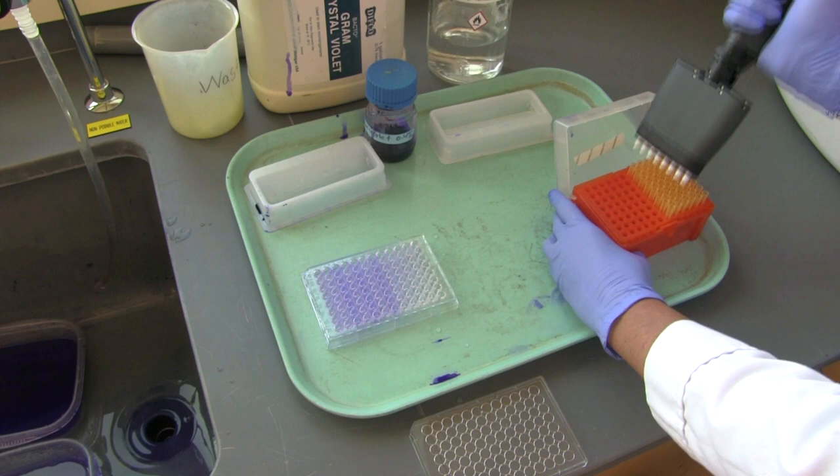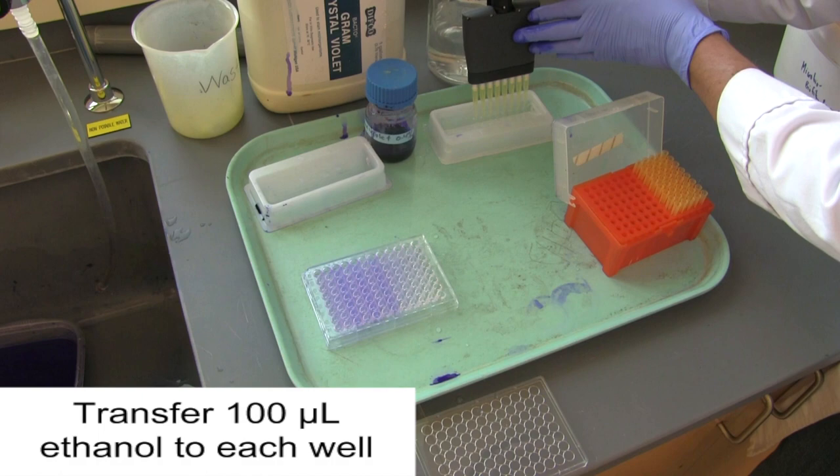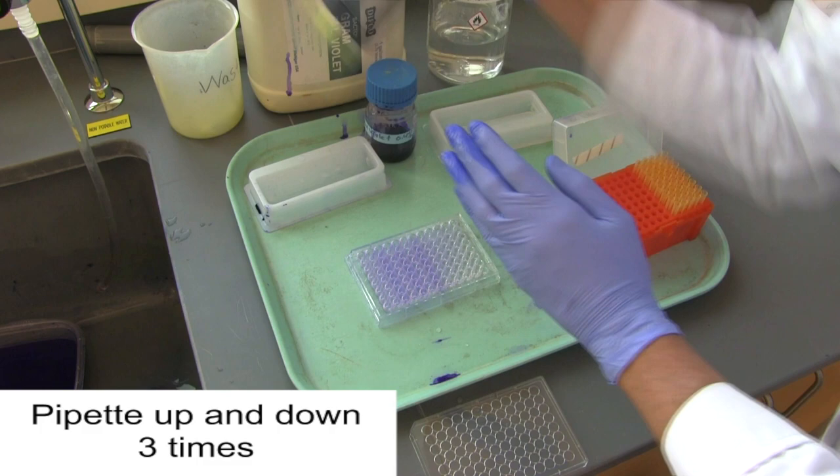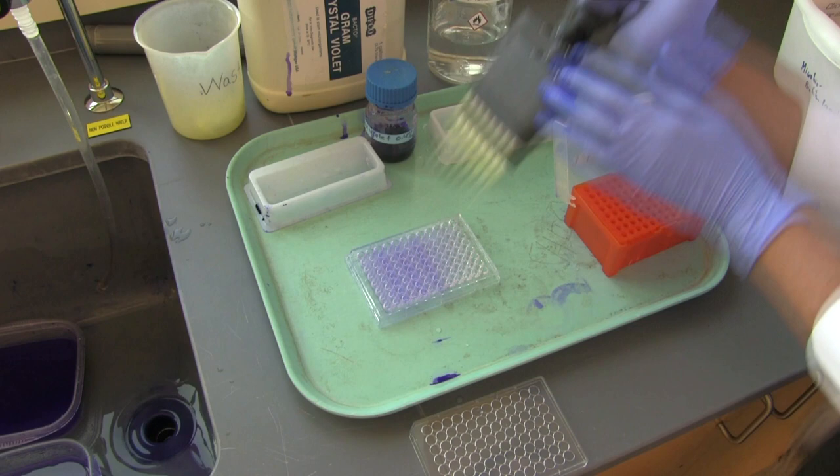Set your pipette to 100 microliters and pick up eight tips. Transfer 100 microliters of ethanol into each well. This time, pipette up and down three times to help solubilize those cells in the biofilm. And then, after each row, eject the tips and get eight new tips.